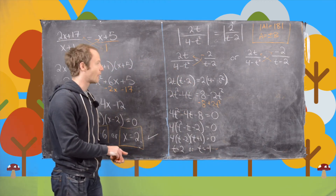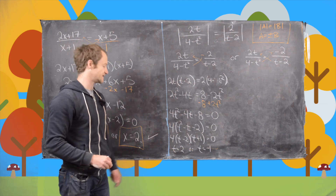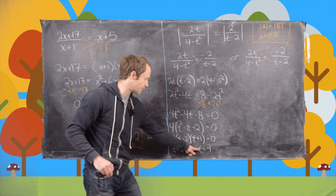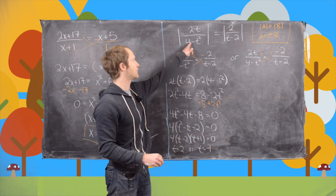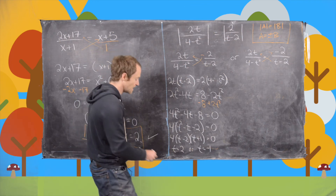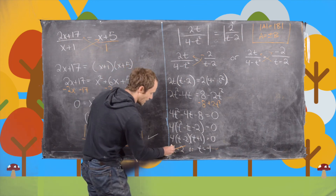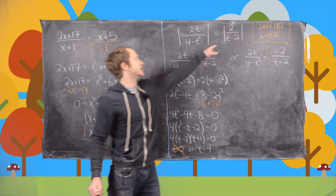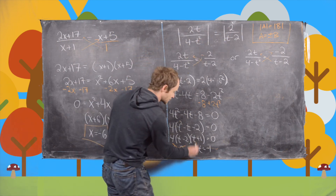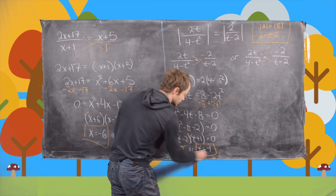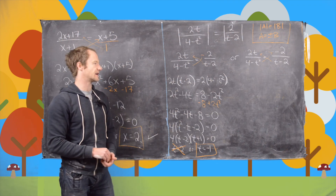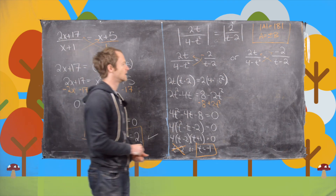Now we go back to the original equation to check both solutions. Plugging in t = −1, the denominators are fine — they do not become 0. But plugging in t = 2 gives a 0 in the denominator, so t = 2 is an extraneous solution. We keep t = −1.